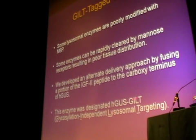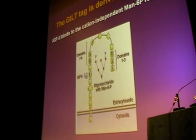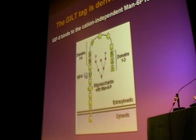This enzyme was designated H-GUS-GILT, the GILT standing for glycosylation-independent lysosomal targeting. The GILT tag is derived from insulin-like growth factor 2, or IGF-2.